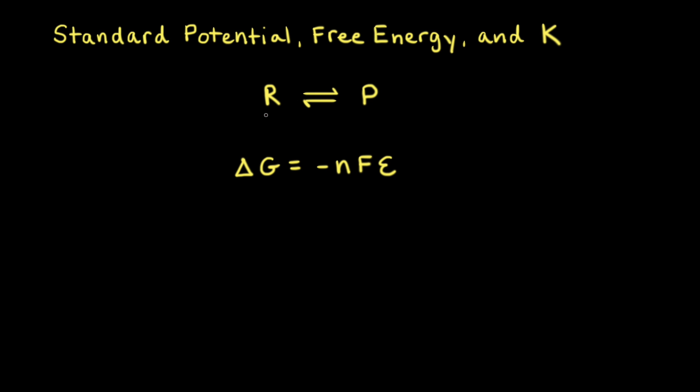For a generic redox reaction where the reactants turn into the products, the free energy is related to the potential for the redox reaction. The equation that relates free energy and potential is given by ΔG = −nFE.